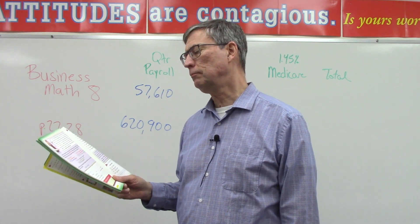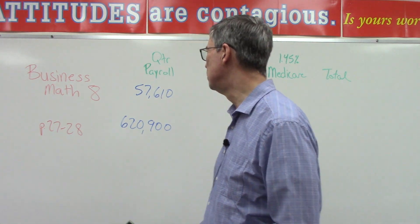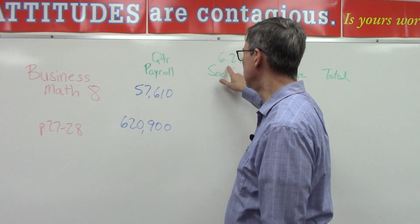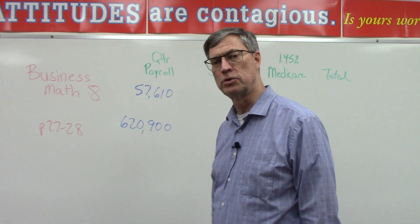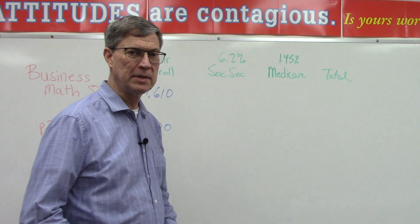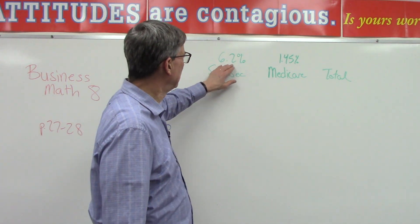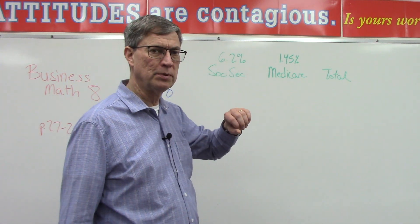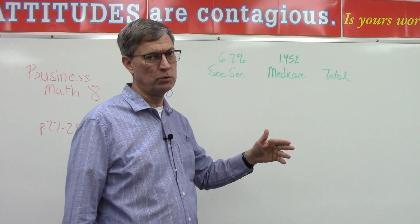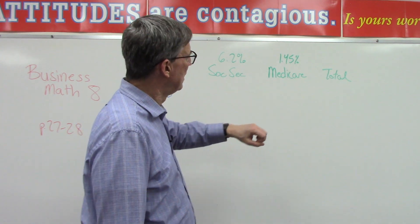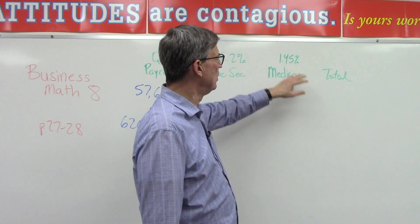All right, we'll get to that later. The two percentages are 6.2% for Social Security that gets taken out of the employee's paycheck, and then 6.2% that the employer has to pay. For Medicare, it's 1.45%.